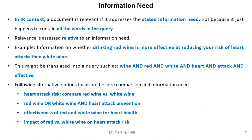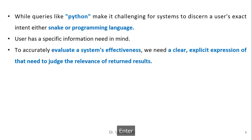In the IR context, a document is relevant if it addresses the stated information need — not merely because it contains all the words in the query. Relevance is assessed relative to an information need. For example, the need 'Is drinking red wine more effective at reducing heart attack risk than white wine?' might be translated into a Boolean query such as: wine AND red AND white AND heart AND attack AND effective. However, such a query may not necessarily retrieve all the truly relevant documents.